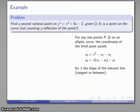For any two points P, Q on an elliptic curve, my third point has to satisfy x₃ = λ² - x₁ - x₂, and y₃ = λ(x₁ - x₃) - y₁, where λ is the slope of the relevant line. If the two points are distinct, then the relevant line is the line between the two points. If I only have one point, then I'm just going to use the slope of the tangent line.